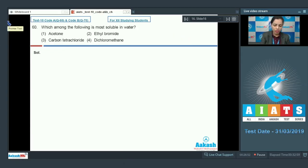After that, question number 60: Which among the following is most soluble in water? We have acetone, ethyl bromide, carbon tetrachloride, dichloromethane. We know that like dissolves like - it means polar solute is soluble in polar solvent. If I talk about acetone, acetone is propanone. Now in the presence of water it has the nature to form hydrogen bond in a very less extent, though, but still it can form that bond.